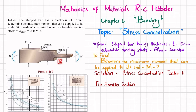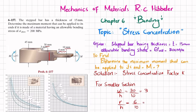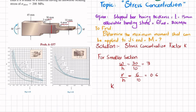For the smaller section, we need W/H and R/H to calculate K from the graph. Here W is 30 and H is 10, so W/H = 30/10 = 3. For R/H, the fillet radius is 6 mm and H is 10, so R/H = 6/10 = 0.6.